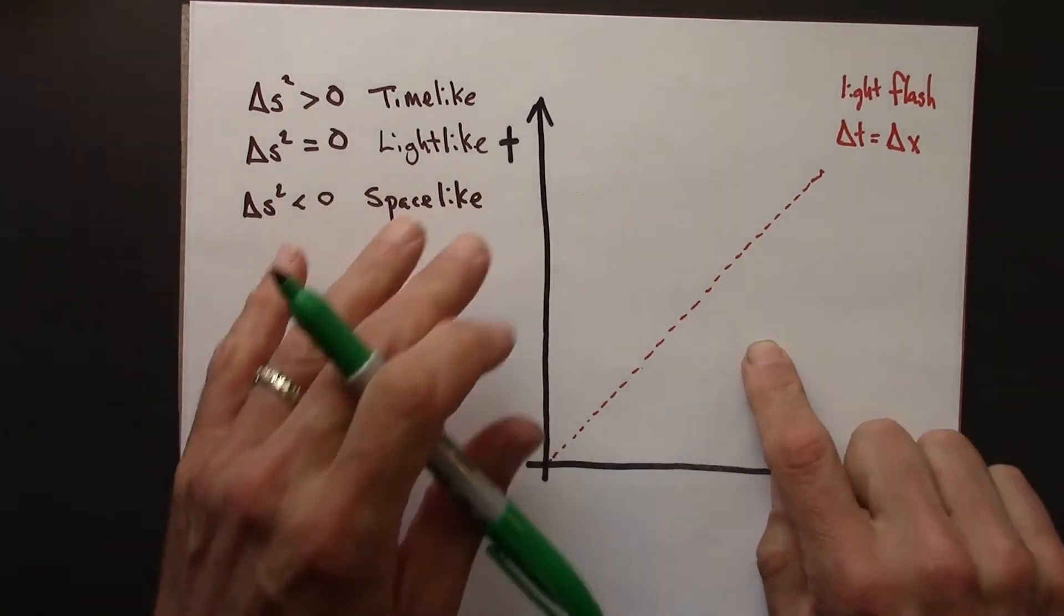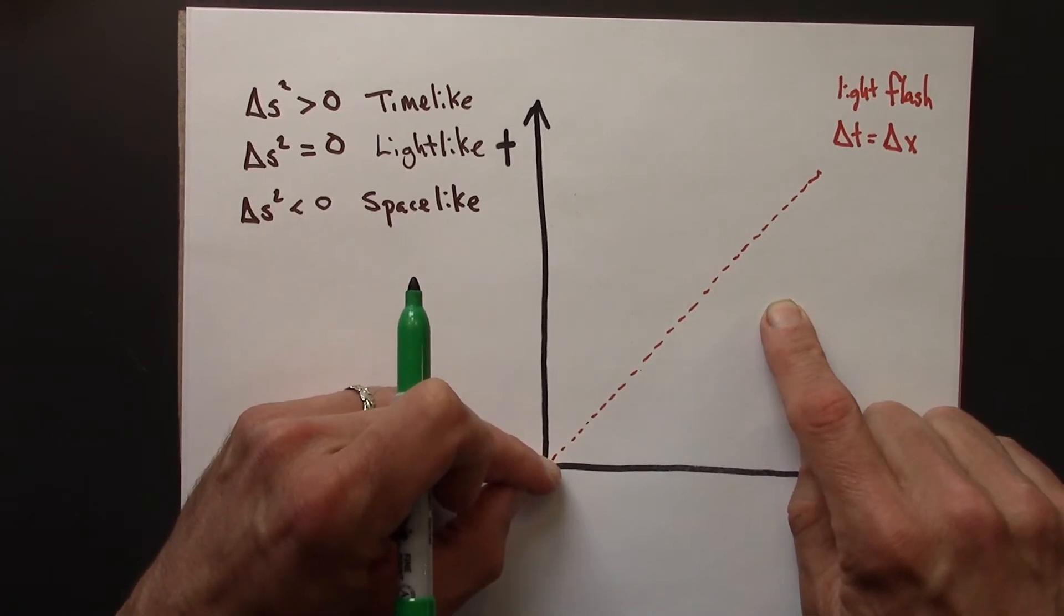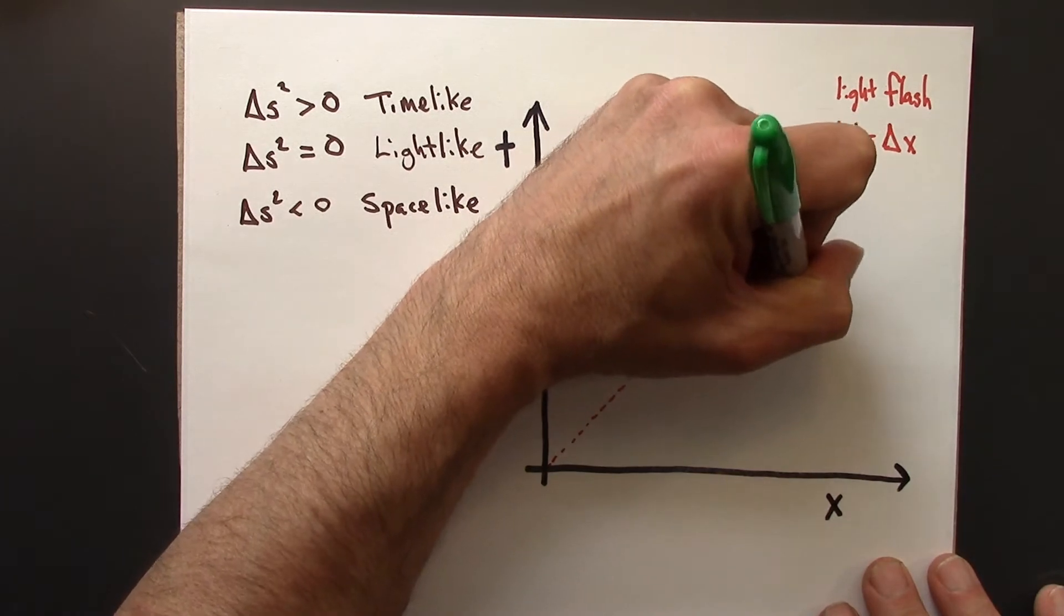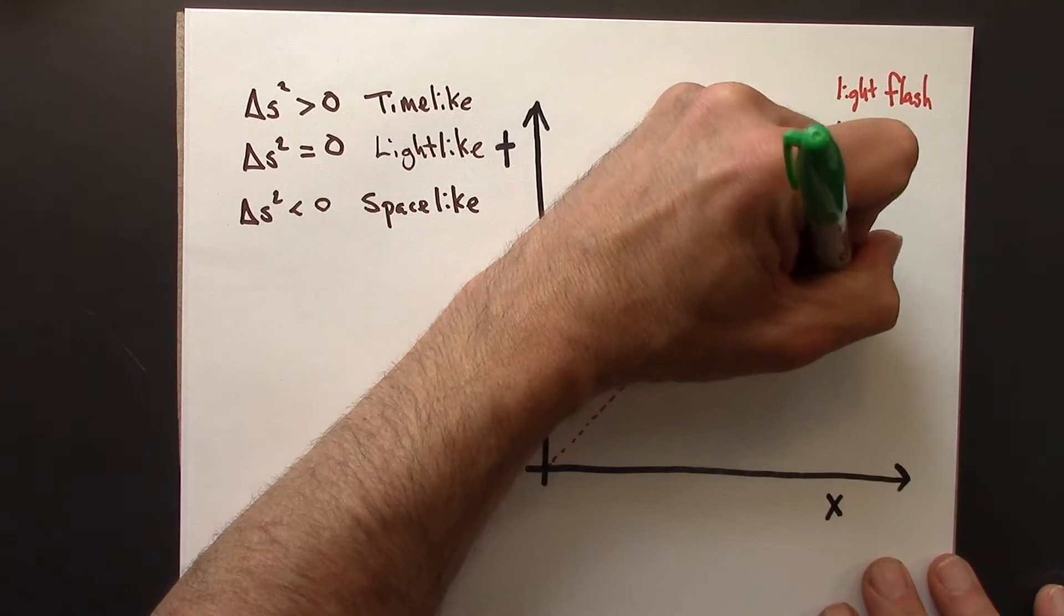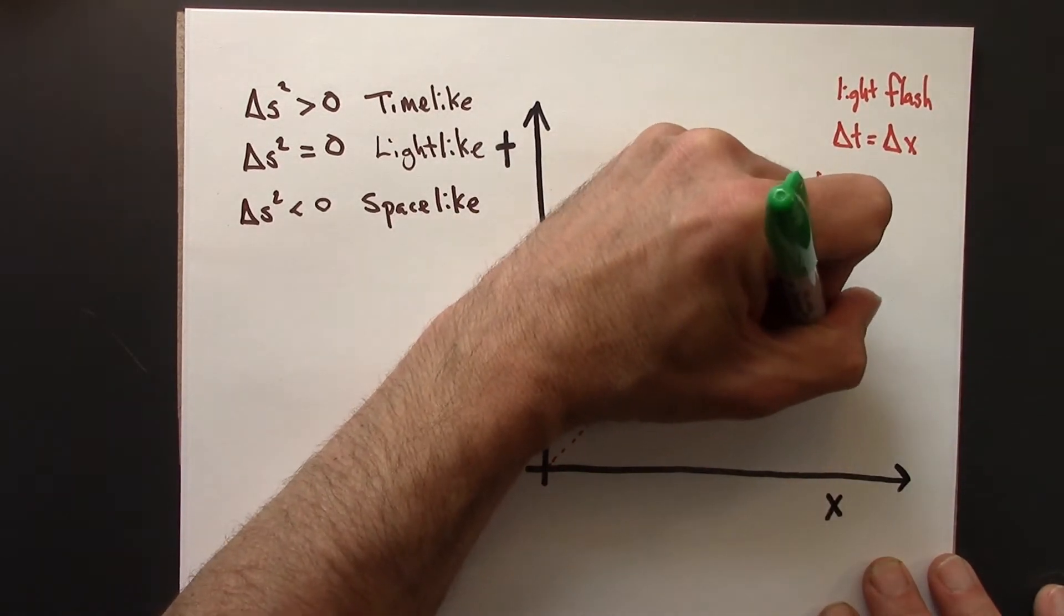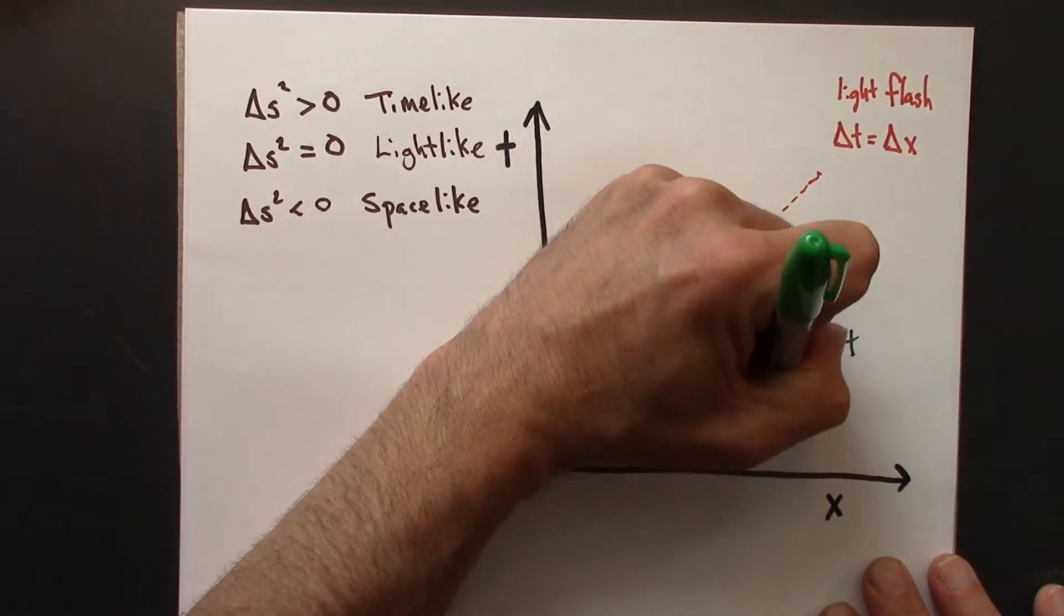Over in this region, so if I had a point here compared to the origin, that corresponds to the case I've got delta S squared is negative. That means that delta X is greater than delta T, and we would say that this is space-like.